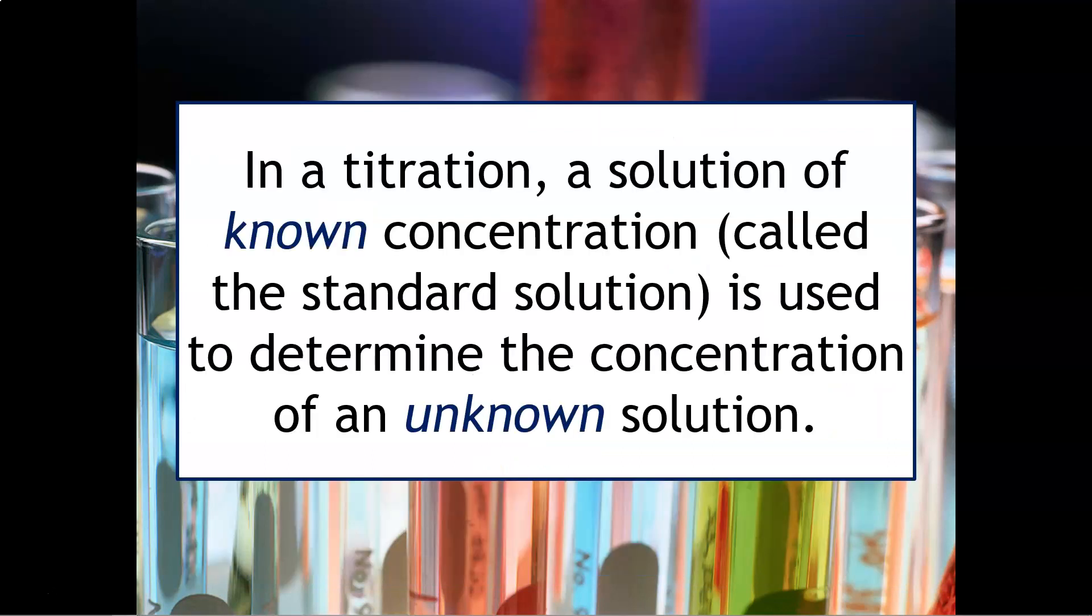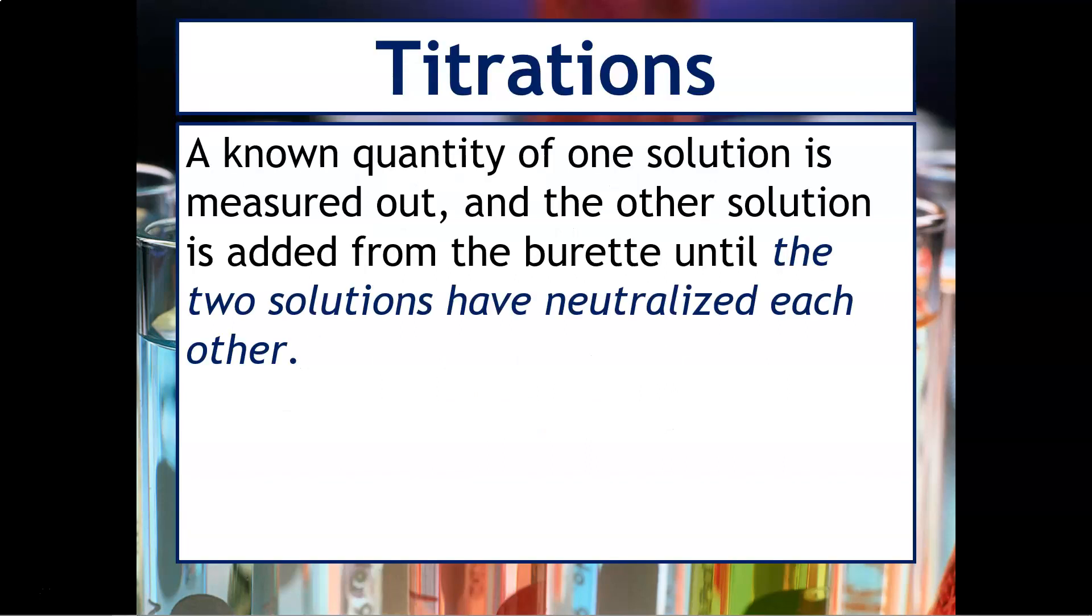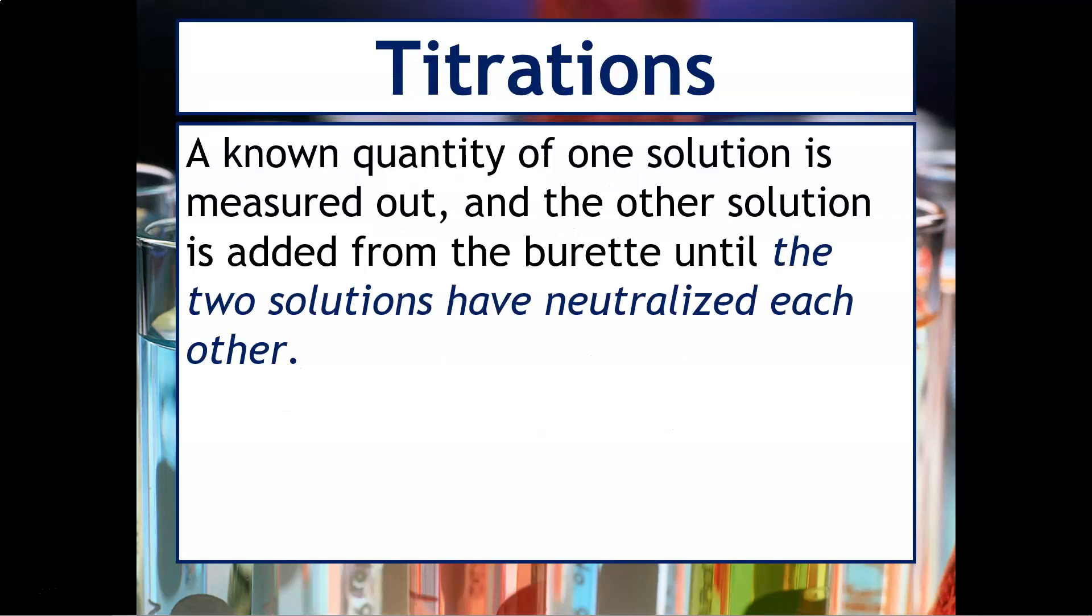In a titration, a solution of known concentration called a standard solution is used to determine the concentration of an unknown solution. So what happens during a titration is a known quantity of one solution is measured out and the other solution is added from a burette until the two solutions have neutralized each other.